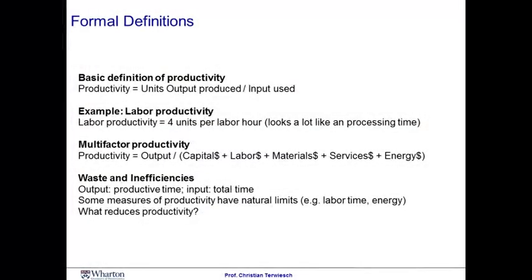We can define productivity as a ratio between the units of output produced and the input that is used. For example, we can define labor productivity as four units per labor hour. Units might be insurance claims, vehicles, or patients — you can think about the output produced per labor hour as a productivity measure.